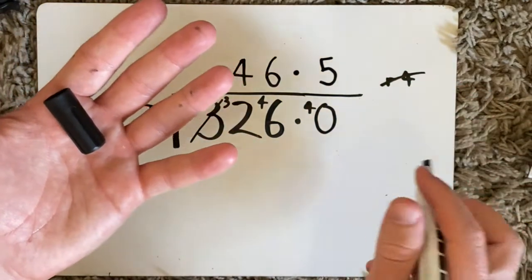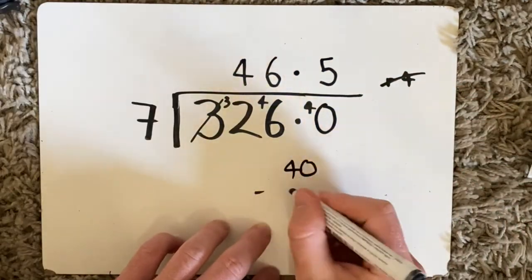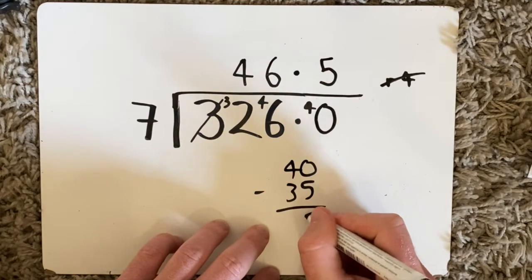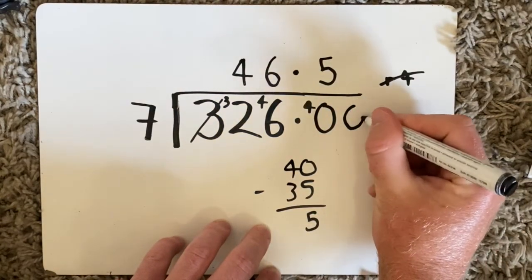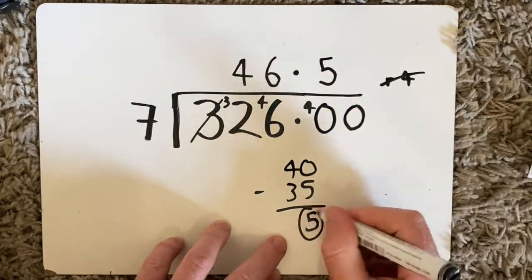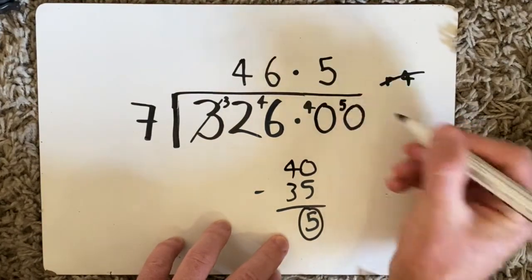How many are left over? 40 take away 35 gives me a remainder of 5 so I need to draw another zero and this remainder goes here.